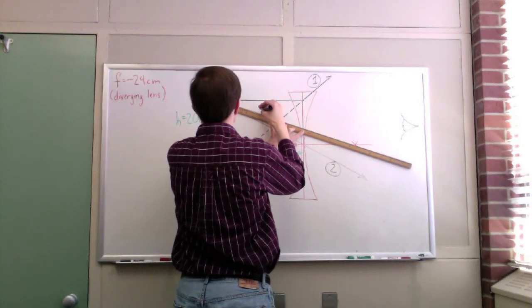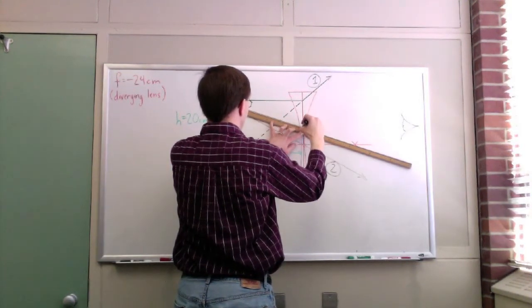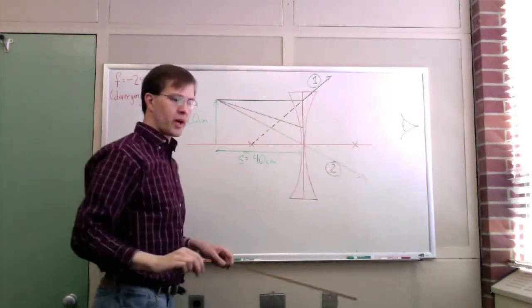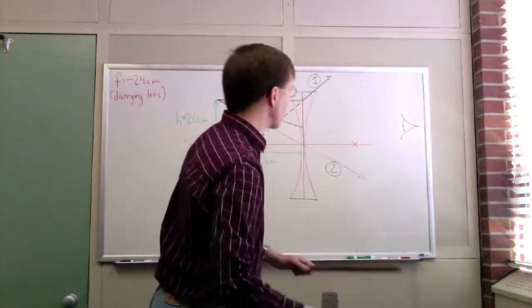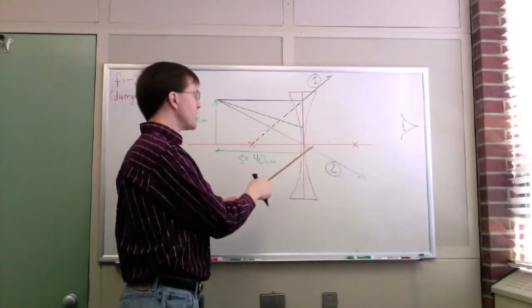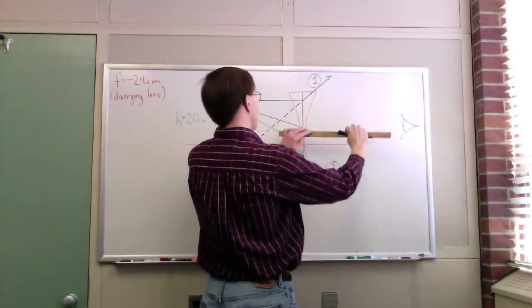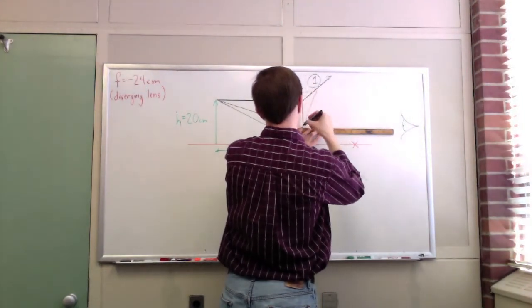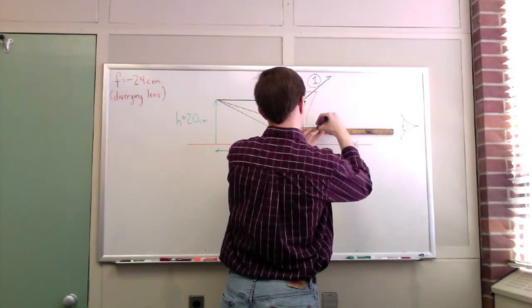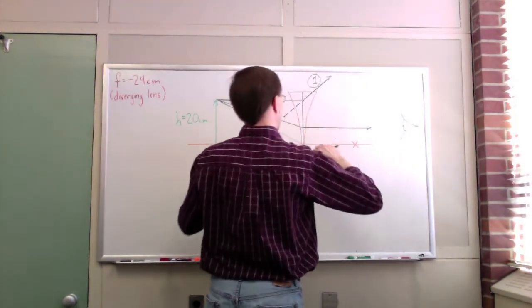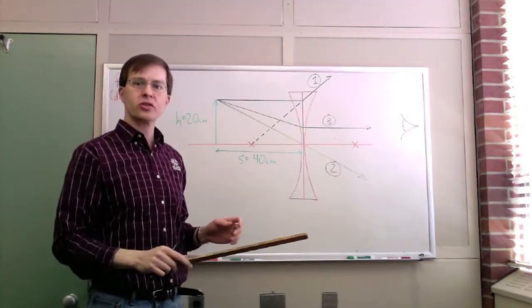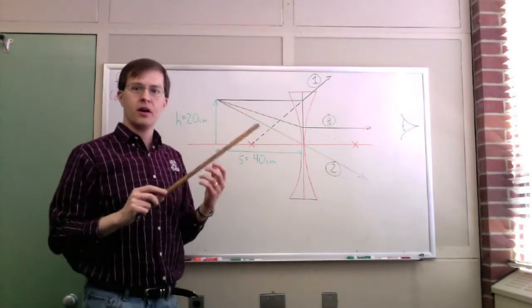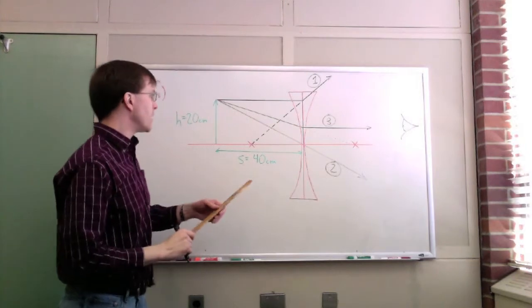Principal ray three comes down aimed as if going through the far focal point, and when it reaches the lens it comes out the other side parallel to the axis. Looking at ray three, you can see how it looks like ray one run backward: parallel to the axis on that side, then diverging as if going away from that far focal point. Our thin lens approximation is doing all the work here.